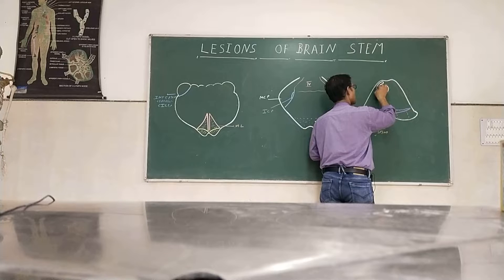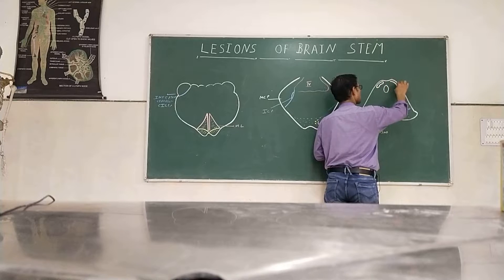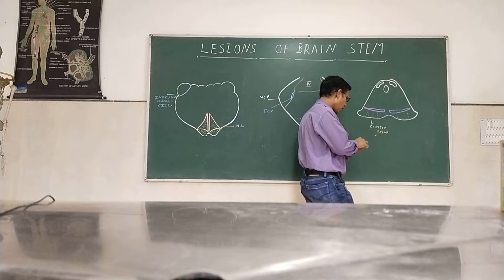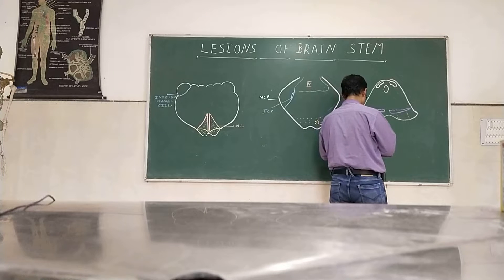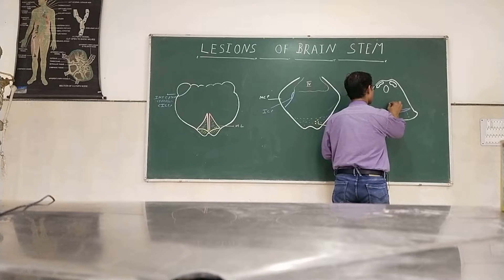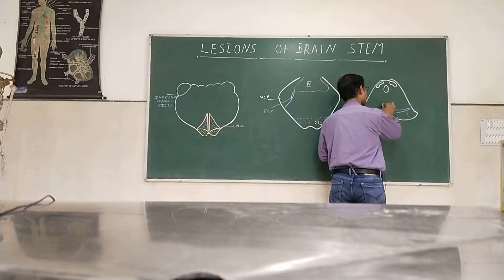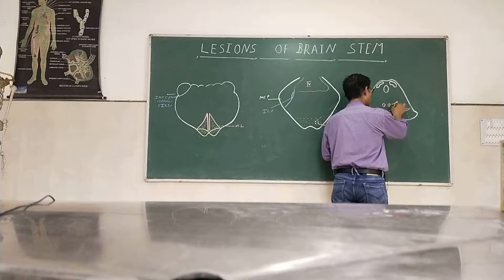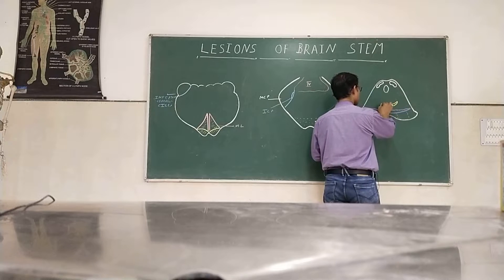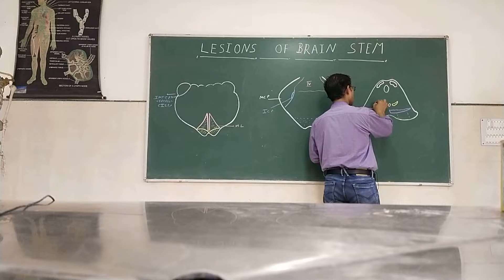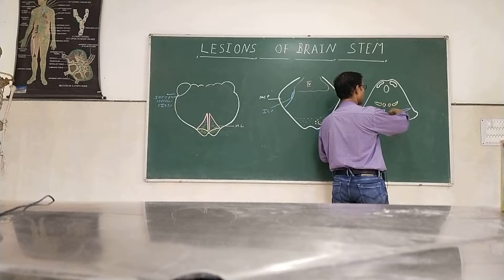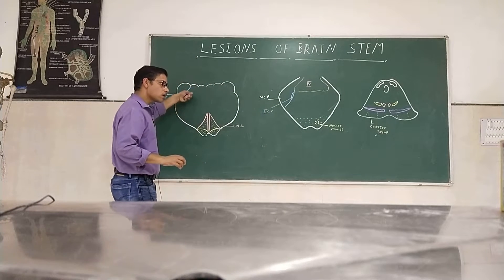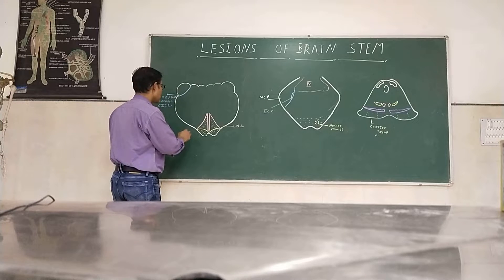That is the superior colliculus region. Here is the MLSL and especially one structure — the red nucleus. Concerning the medial lemniscus, the lateral lemniscus lapses on the lower part. Now moving to the dorsal aspect — some sensory nuclei are there.